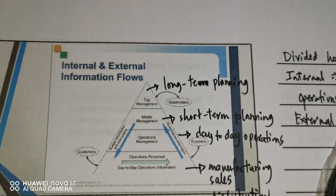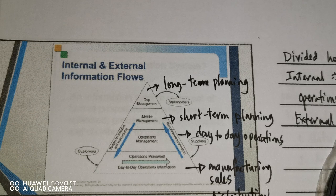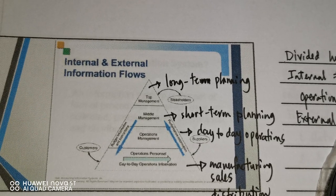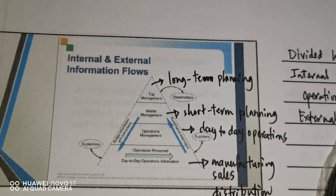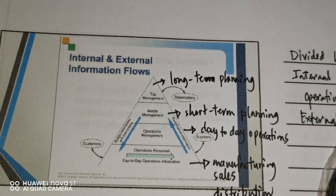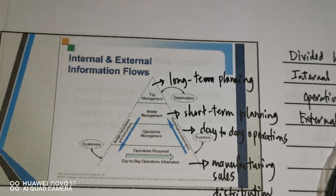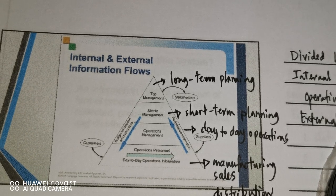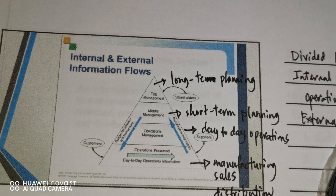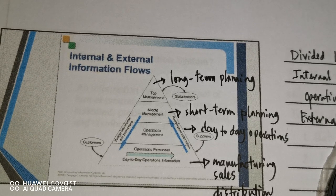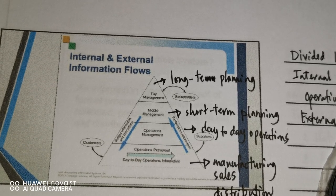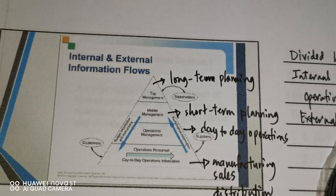To simplify: top management formulates goals and objectives as a whole. Middle management formulates strategies on how to achieve those goals and objectives given by top management. From there, it goes down to operations management, who give clear instructions, down to operations personnel who carry out the day-to-day operations.